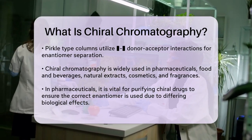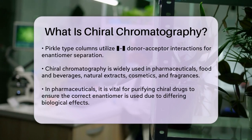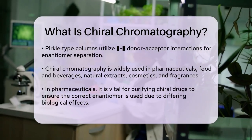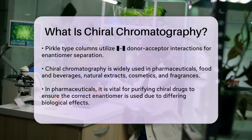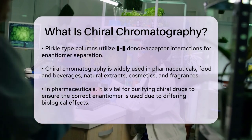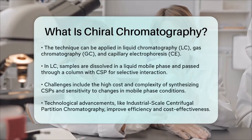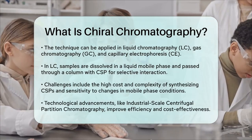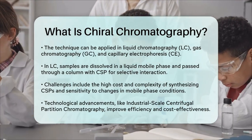The technique can be applied in different forms of chromatography, such as liquid chromatography (LC), gas chromatography (GC), and even capillary electrophoresis (CE). In LC, for example, the sample is dissolved in a liquid mobile phase and passed through a column containing the chiral stationary phase, which selectively retains or interacts differently with each enantiomer.